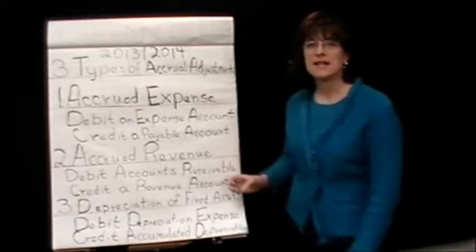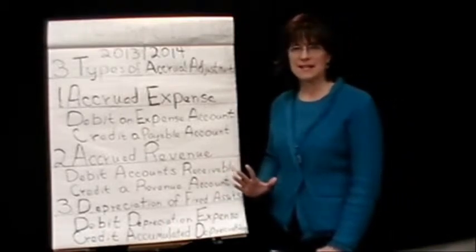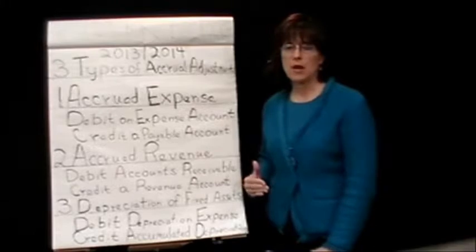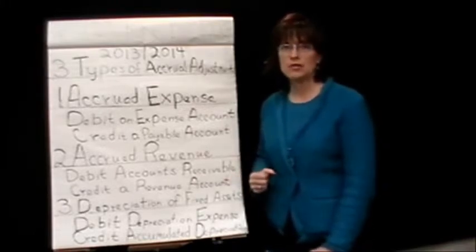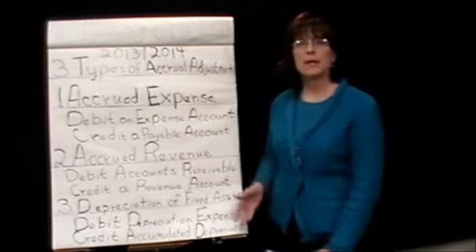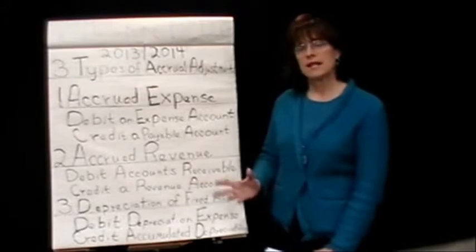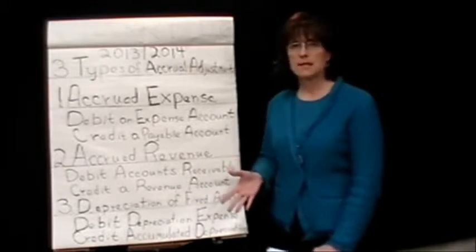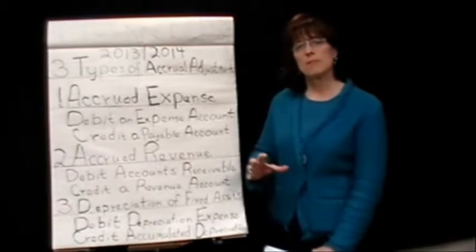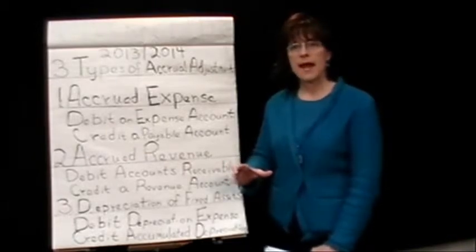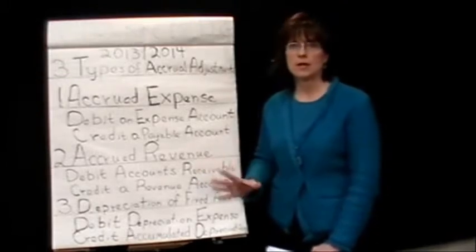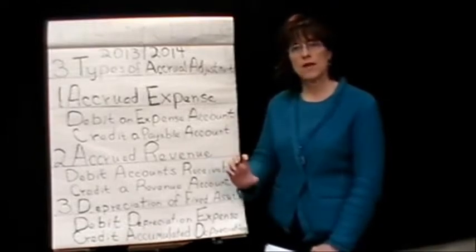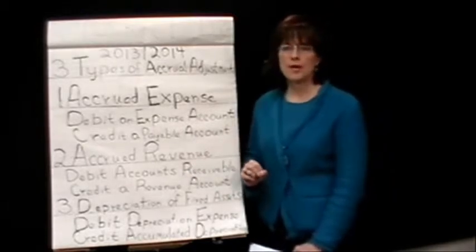For depreciation, this is something we will be taking on our fixed assets. In this chapter they always give us the dollar value for depreciation; in a later chapter we'll learn how to compute that number. When recording depreciation, we're taking part of the cost of a fixed asset — fixed assets being things we can see, feel, and touch that will last more than a year. It's a way of showing that part of the cost has expired or been used up during the period, since all fixed assets will generally wear out and have to be replaced.